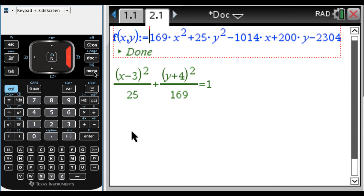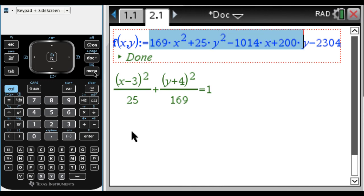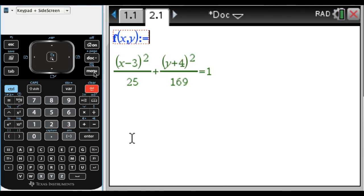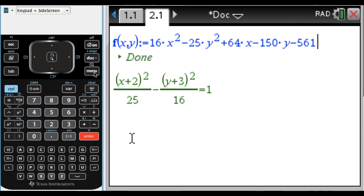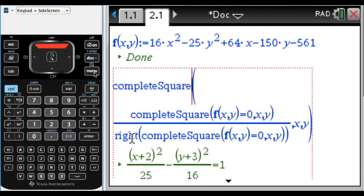Up here, what I can do now is I can change this. I'm just going to highlight it and press delete. And now I can put in, I don't know, 16x² minus 25—I'm just getting these from the first page of notes 14 on my website—and then plus 64x minus 150y minus 561. And press enter, and it completes square for us. It does it so fast that you don't even really notice it happening, which is kind of crazy.